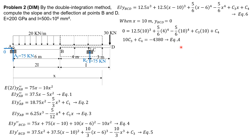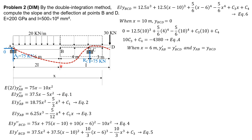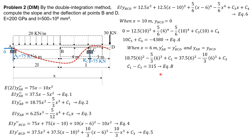There are no more boundary conditions, but at point B — common to both AB and BCD — the slope and deflection must match. When X is 6: Y prime AB equals Y prime BCD. So 18.75 times 6 squared minus 5/3 times 6 cubed plus C sub 1 equals 37.5 times 6 squared plus zero minus 10 times 6 cubed plus C sub 3. Simplifying: C sub 1 minus C sub 3 equals 315. Call this equation B.